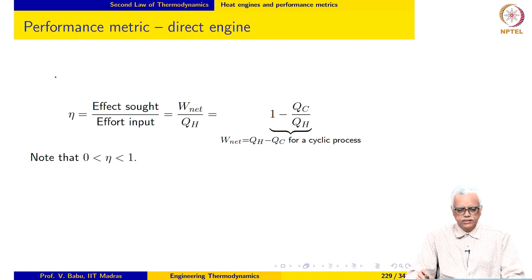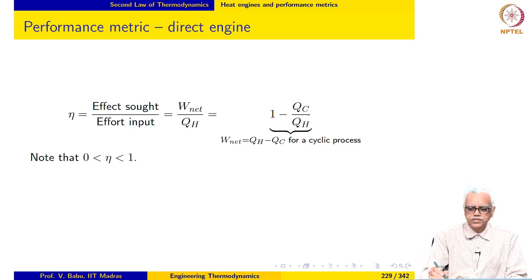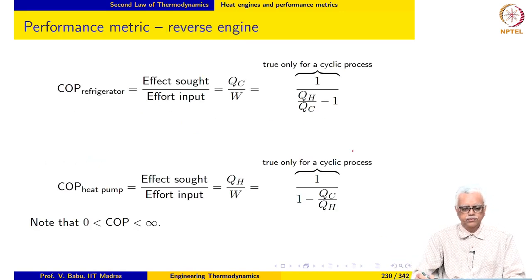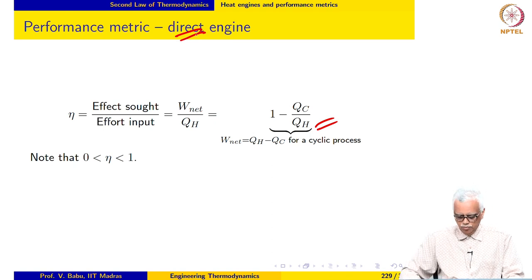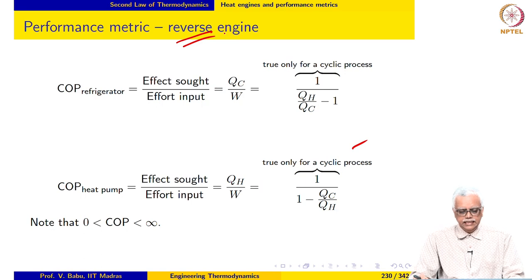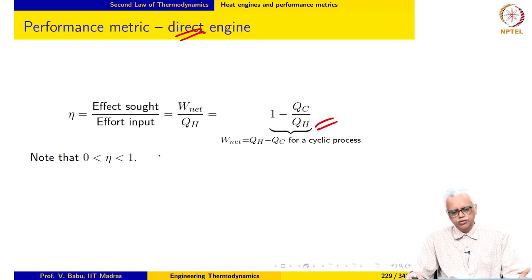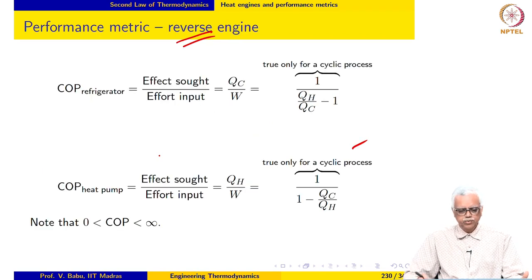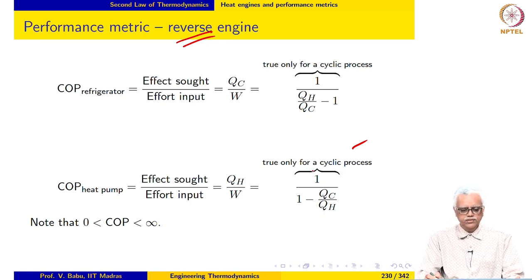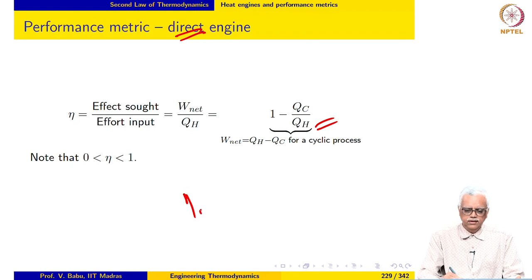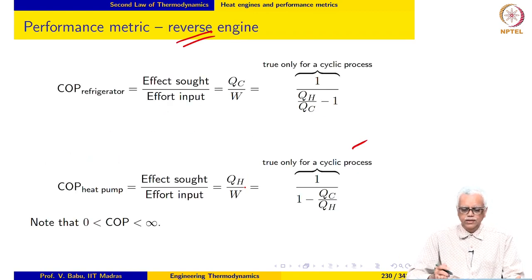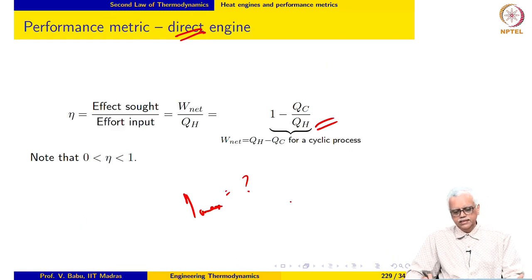In the last lecture, we looked at the definition of efficiency for a cyclic process and the definition of coefficient of performance for a reverse engine. This efficiency is applicable for a direct engine and the COP is applicable for a reverse engine. In principle, the efficiency can go up to 1 and the COP can go up to infinity. The question we asked is: what is the maximum value for efficiency and what is the maximum value for COP?